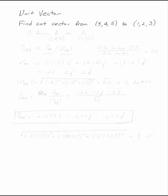Find the unit vector from 3, 4, 5 to 1, 2, 3. We want to find the unit vector u which lies along the line from a to b where a is 3, 4, 5 and b is 1, 2, 3.